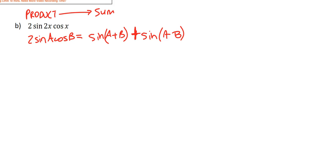And all we're going to do is substitute in. So that's going to become sin of 2x plus x plus the sin of 2x minus x. The sin of 3x plus the sin of x. Okay?